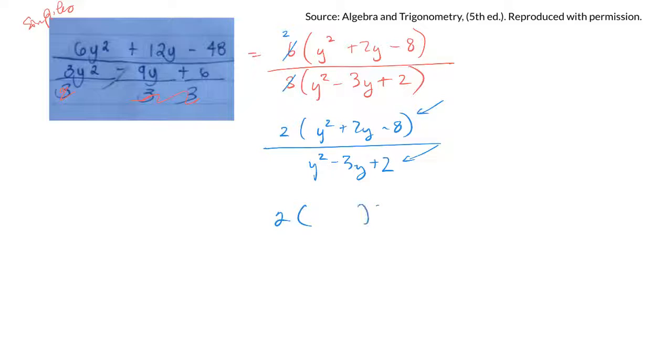For the top one, I can split it into y and y. Two numbers that multiply to negative 8 and add to positive 2. Like negative 4 and 2, no that adds to negative 2.